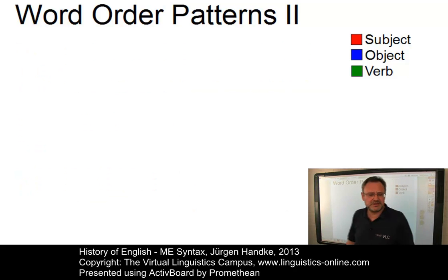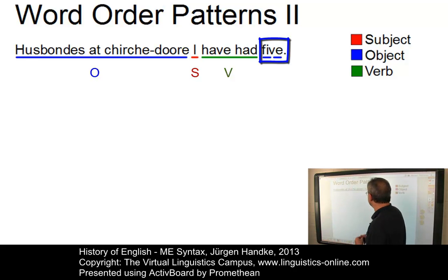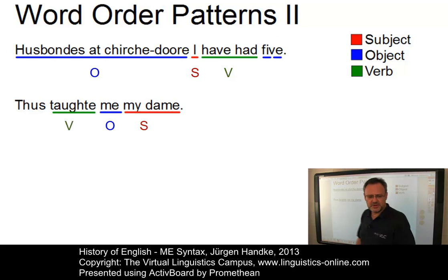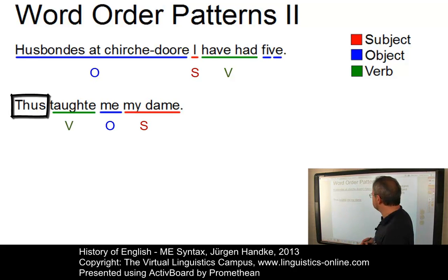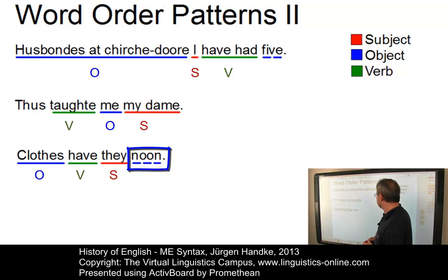Further word order patterns in Middle English all appear, but they are relatively rare, especially in prose. Here we have an OSV pattern — object, subject, verb — with special emphasis on the quantifier that is part of the object: 'Husbands at church door he hath at five' — object, subject, verb, then part of the object at the end. The second pattern is VOS, with the verb in second position due to the initial adverbial 'thus': 'thus taught me my dame', already discussed previously. In the last example, 'clothes have they none' — an OVS structure with special emphasis on the quantifier. 'They have no clothes' would be a present-day English version.